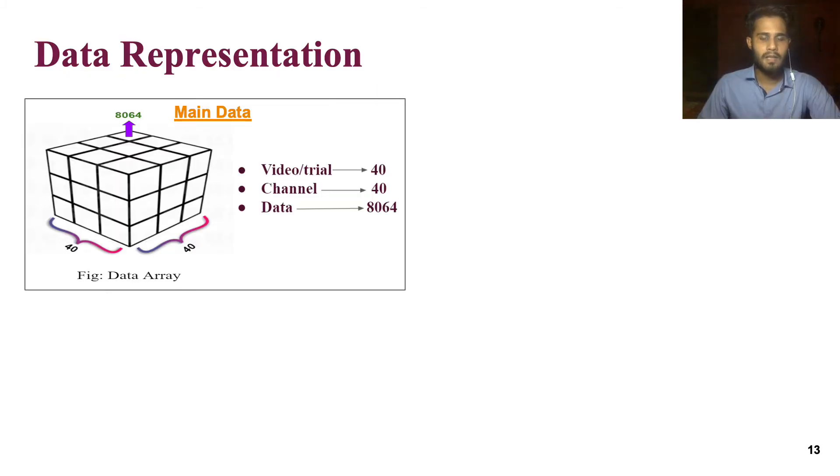In the DEAP dataset, each person's data are stored in an individual file where every file contains label data along with main data. Main data are found in 40x40x8064 format. Here first 40 denotes the trial number, second 40 denotes the channel number, and 8064 refers the number of data.